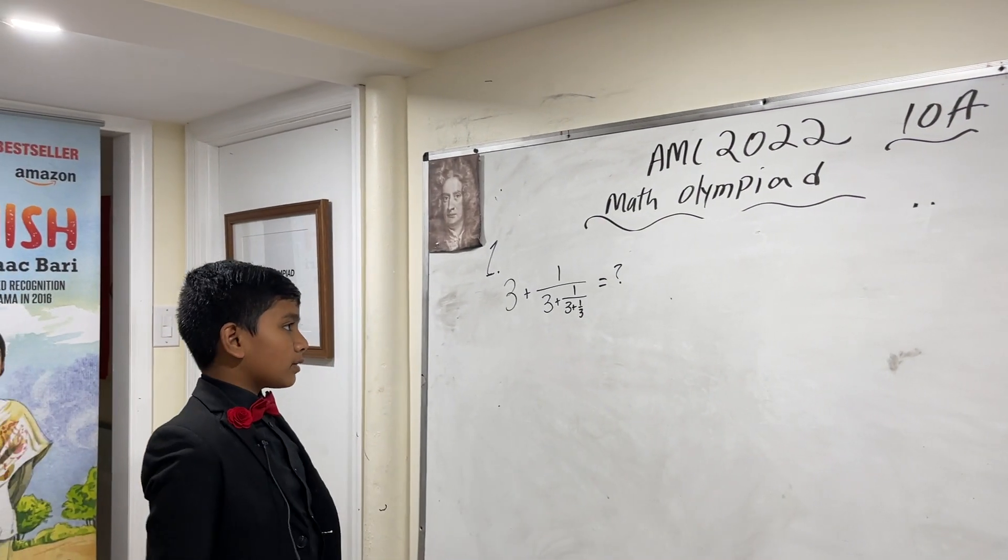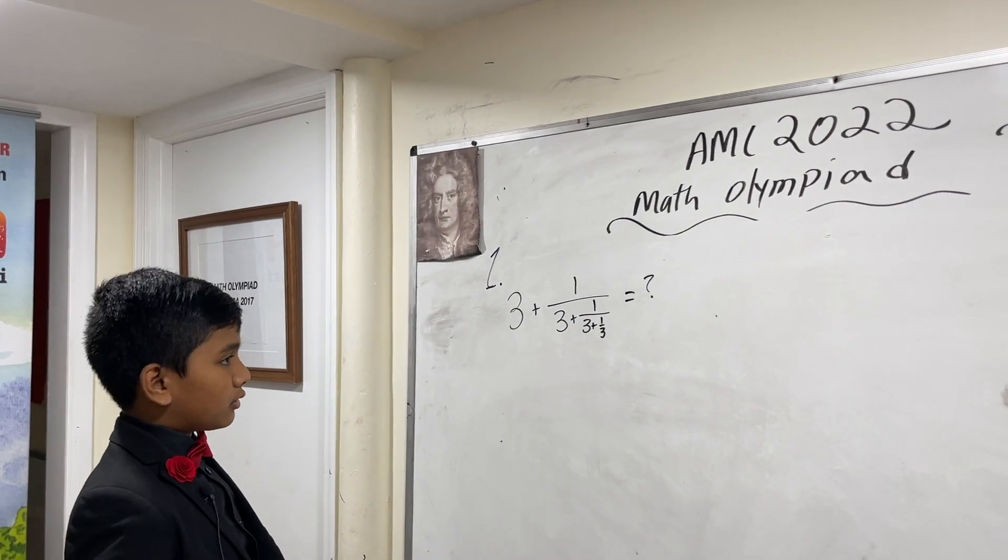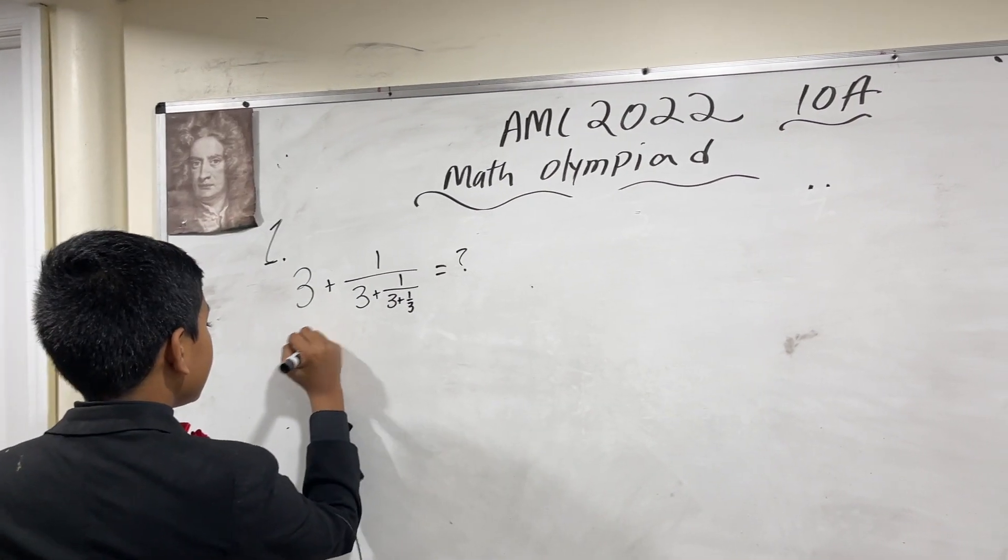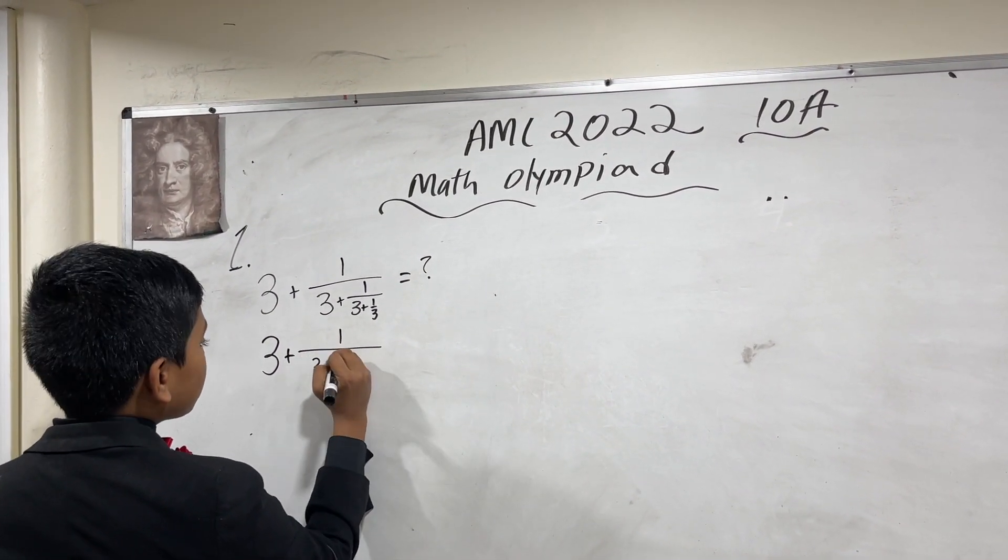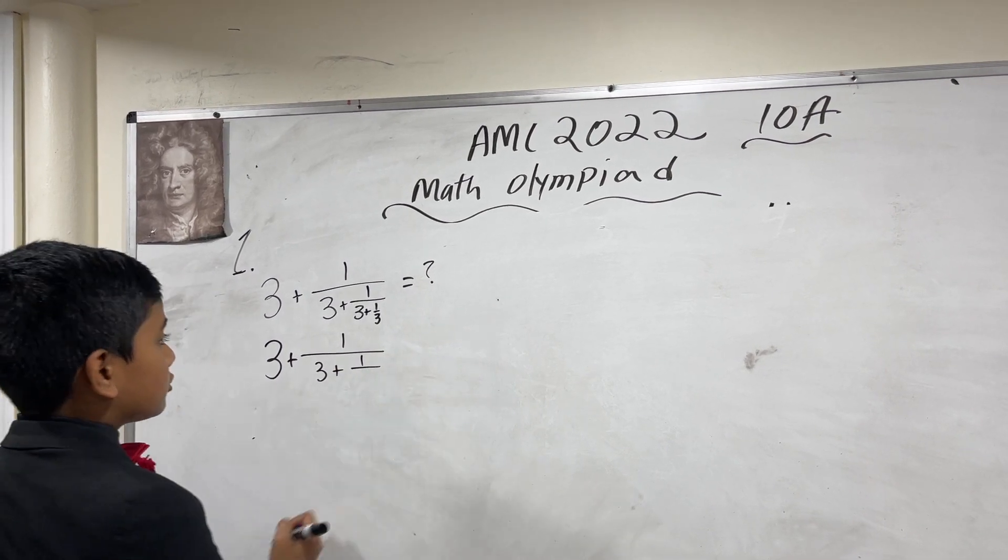So, 3 plus 1 over 3 plus 1 over 3 plus 1 over 3 equals what? Well, this is actually quite simple, even though you may make an arithmetic mistake due to stress over the test.